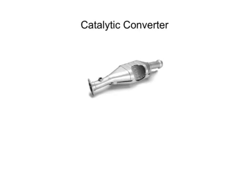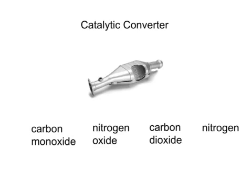Catalytic converters are part of the exhaust system of modern petrol cars. They contain a chamber which has a honeycomb coated with a precious metal like platinum or palladium. This makes a chemical reaction occur between two of the pollutant gases from the car engine. They convert the nitrogen oxide and the carbon monoxide in the exhaust very quickly into carbon dioxide and nitrogen gas. The equation has carbon monoxide plus nitrogen oxide as the reactants, making carbon dioxide and nitrogen as the products.